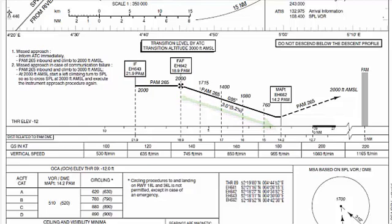We will do a 745 feet per minute descent. Once we reach our missed approach point, that is around 14.2 DME from Pampas VOR, we will do our landing if we have visual contact with the runway or the runway lights. If not, we will do a missed approach, as mentioned in the profile view right over here.